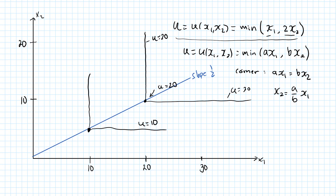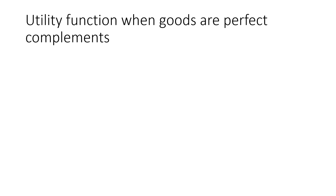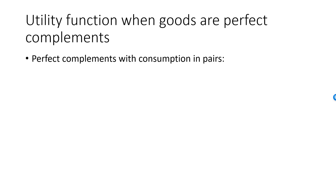In this general case, for each unit I consume of x1, I will consume a/b units of x2. A quick summary of the utility function representing perfect complements: if I always consume two goods in pairs, I can use the utility function U = min(x1, x2).